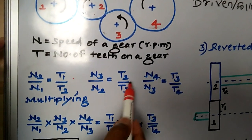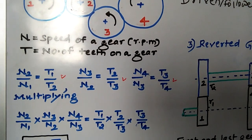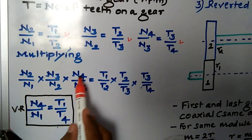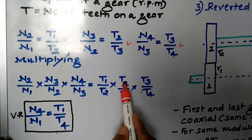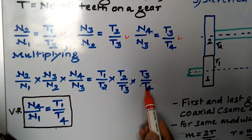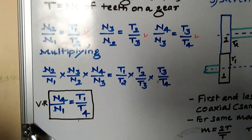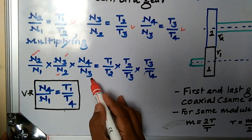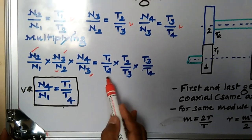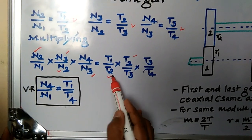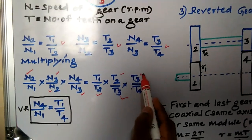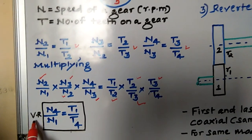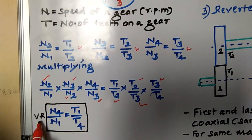Multiplying all three equations together: (N2/N1) × (N3/N2) × (N4/N3) = (T1/T2) × (T2/T3) × (T3/T4). After cancellation, N2, N3 on the left side cancel, and T2, T3 on the right side cancel. The remaining expression is N4 by N1 equal to T1 by T4. That is the velocity ratio, V.R.